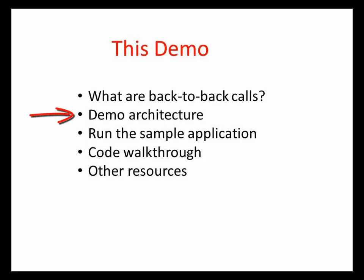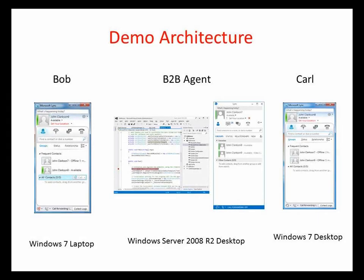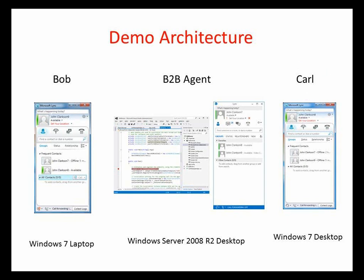I want to explain how I set up the demonstration. There are three computers involved. Bob, our inbound call customer, is represented by a Lync 2010 client named John Clarkson 8 and is running on a Windows 7 laptop. The agent application connects to a Lync 2013 client named John Clarkson 7, and the application is running in Visual Studio 2012 on a Windows Server 2008 R2 desktop. Carl, our customer support employee who receives the outbound call, is represented by a Lync 2010 client named John Clarkson 9 on a Windows 7 desktop. All these computers have a wired connection to a Lync server domain.